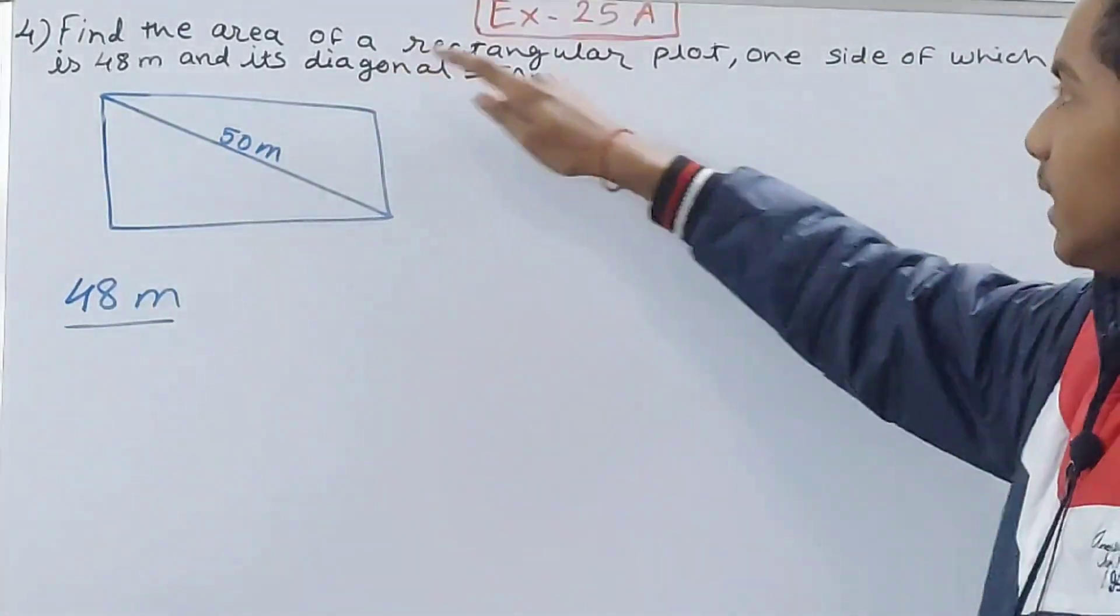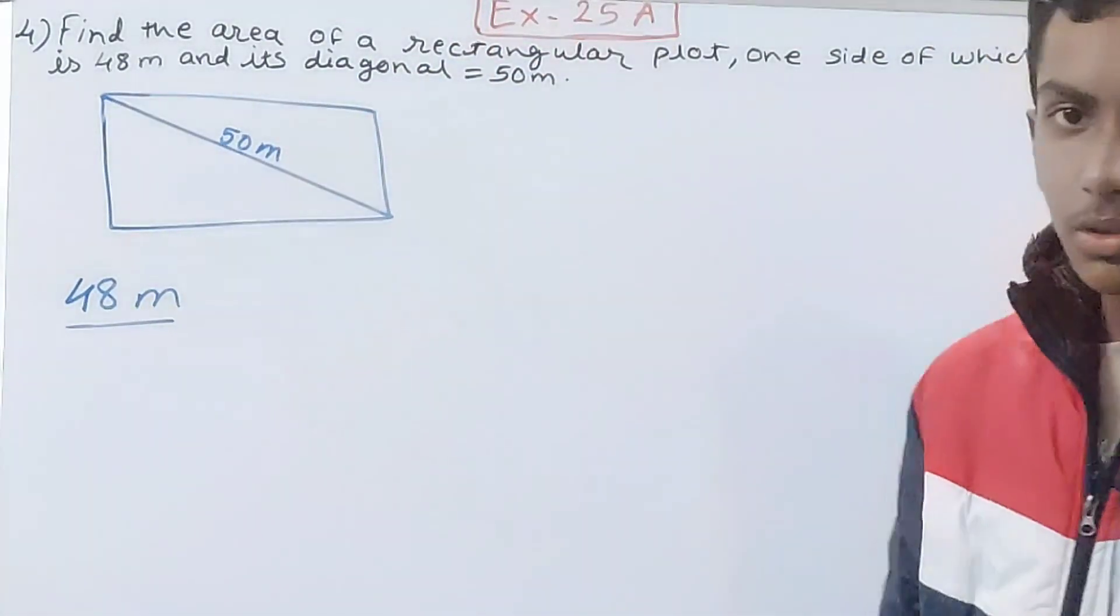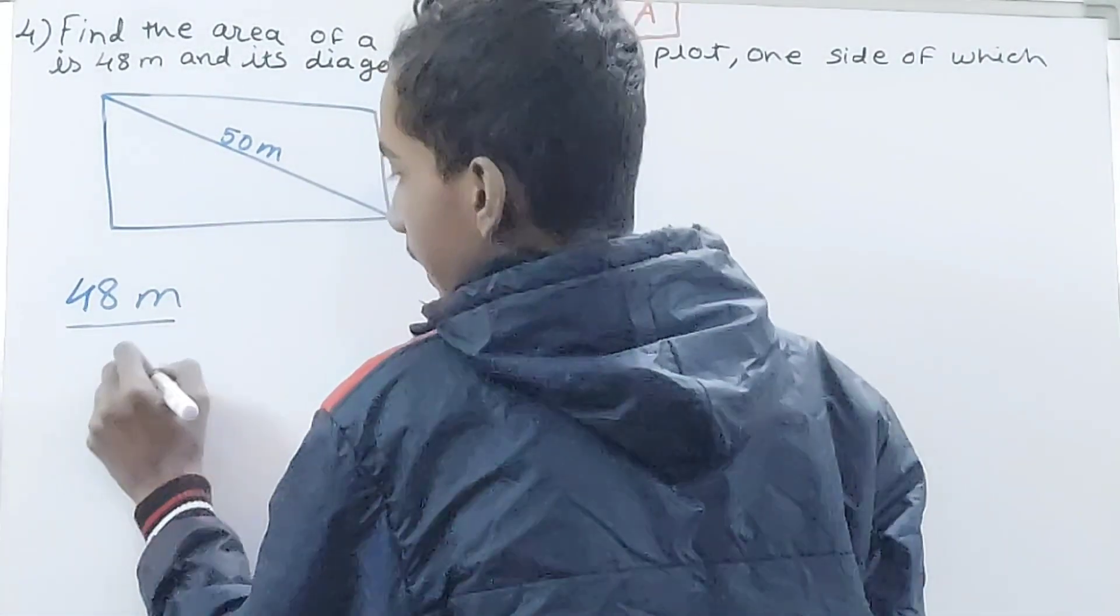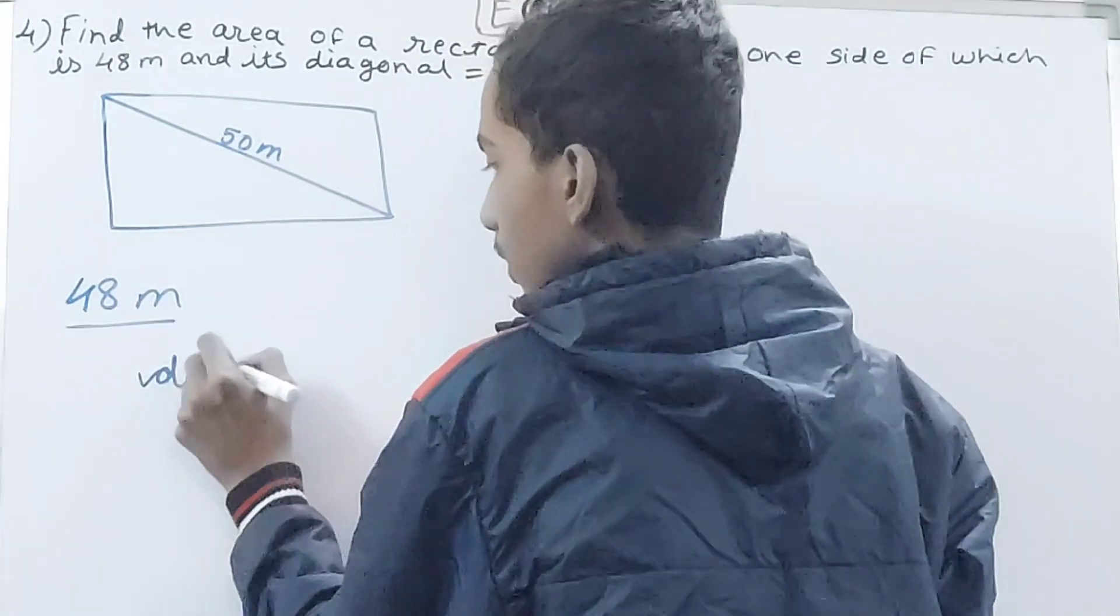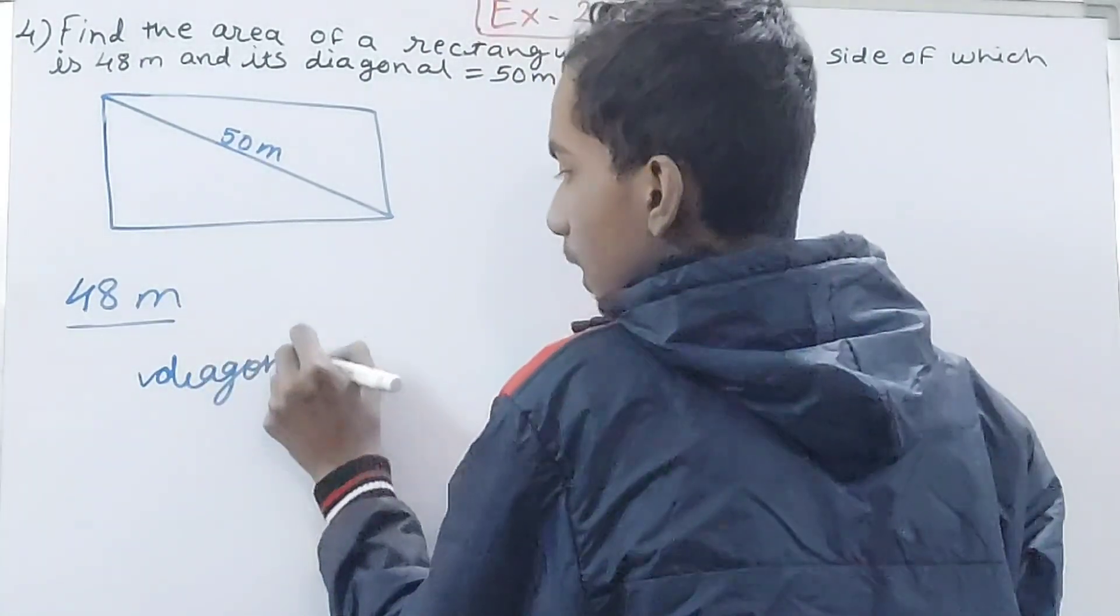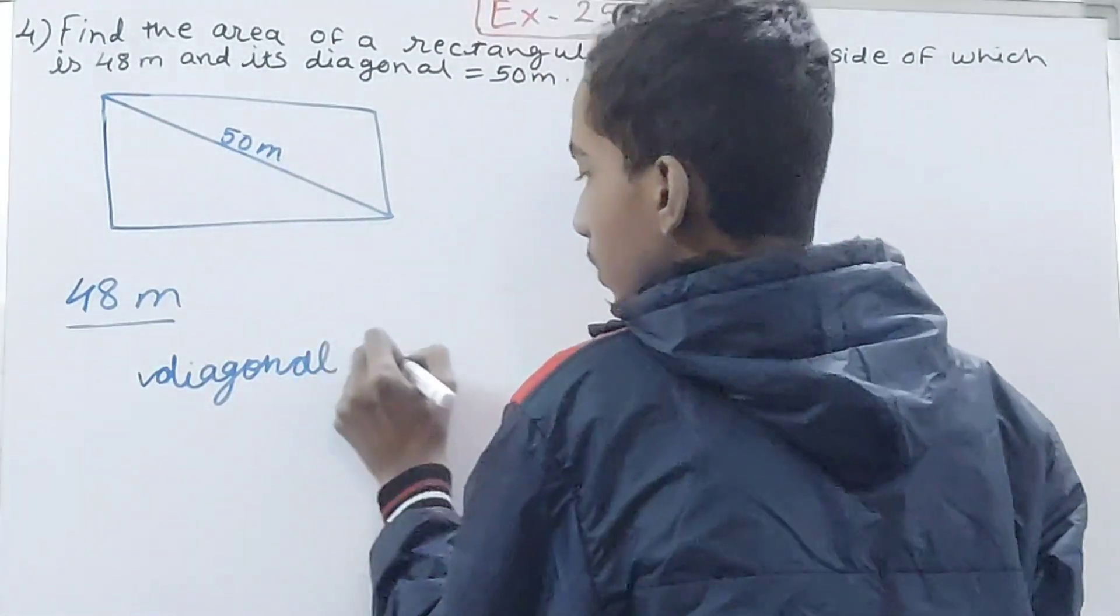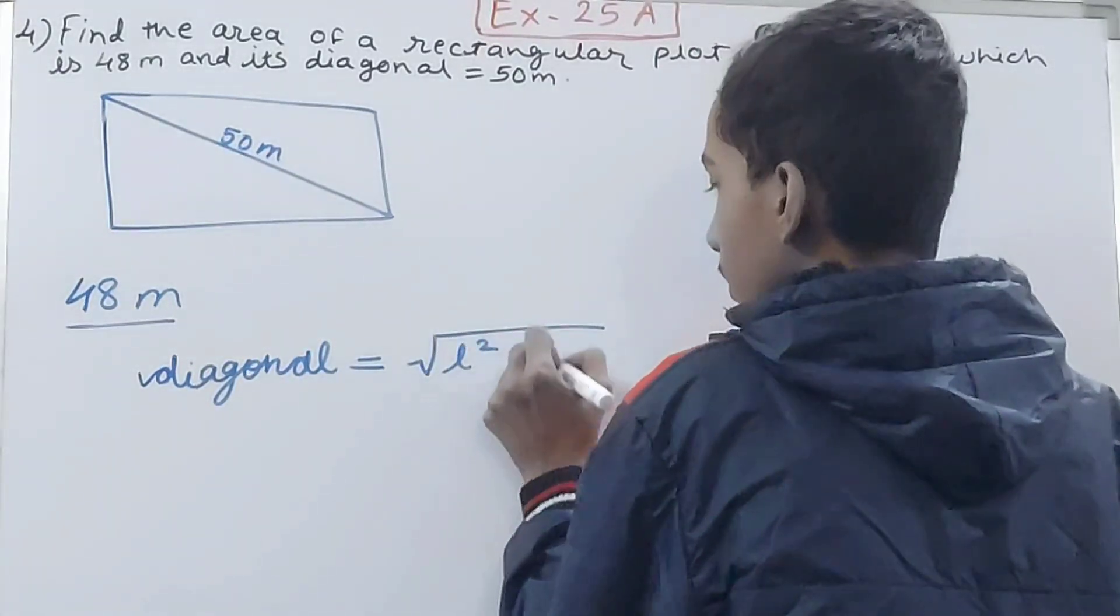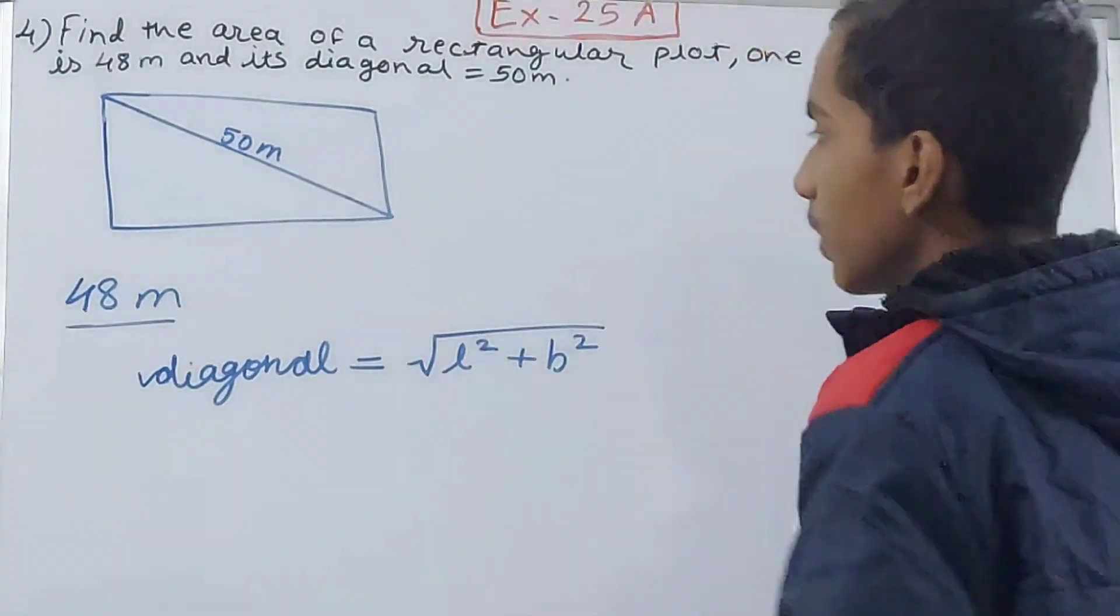Now it is saying find the area of the rectangular plot, so we have to find the area. Now see, there is one formula: diagonal is equal to the root of l² plus b².